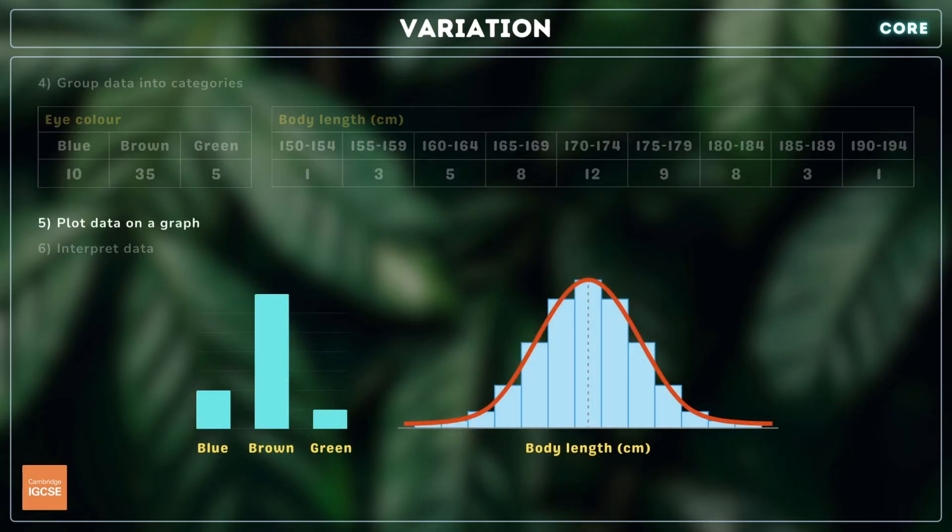Next, plot your data on a graph. The data for eye colour, hair colour, and tongue rolling is categoric, and should therefore be plotted on a bar chart with spaces between the columns. The data for height, shoe size, and body mass is continuous or numerical, so should be plotted as a histogram where each of the blocks touches the next.